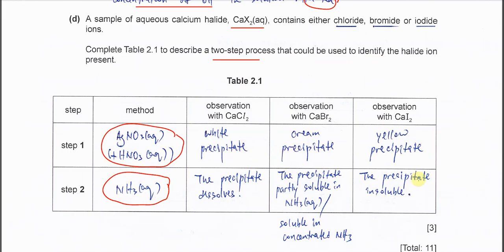These are the standard observations that you should know for each of the halides. For the chloride, you get white precipitate with the silver nitrate. The bromide, you get cream precipitate with silver nitrate. For the iodide, you get yellow precipitate. White precipitate is AgCl, cream precipitate is AgBr, and the yellow precipitate is AgI.